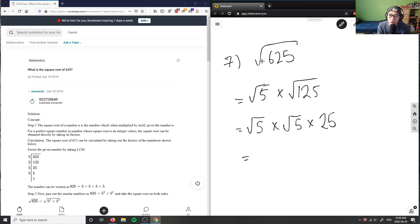And then we have square root of 25, and we have 5 times root 5. We know the square root of 25 is 5, so times 5. Square root of 5 times square root of 5 is simply 5.